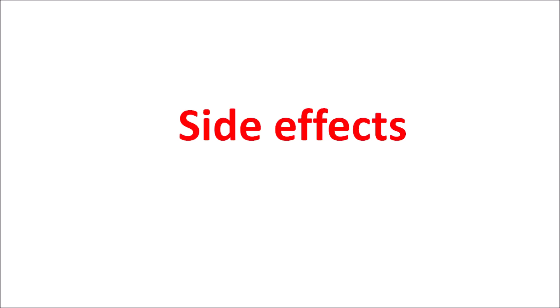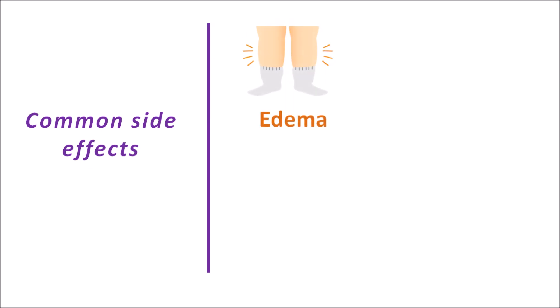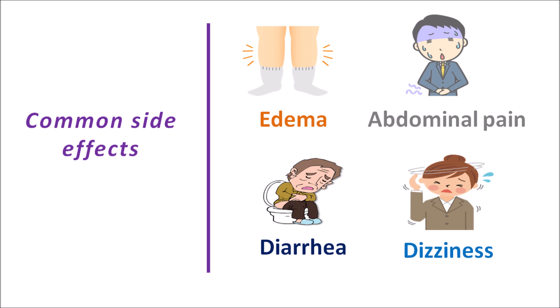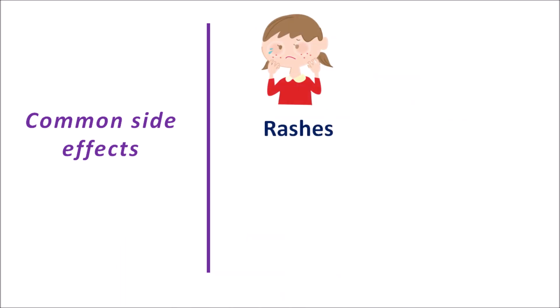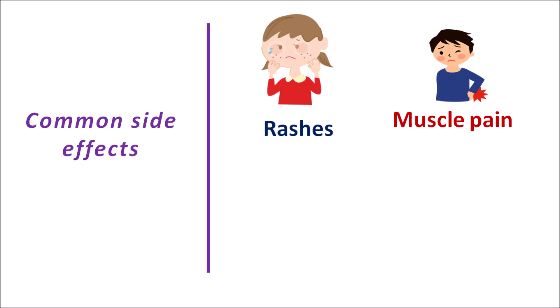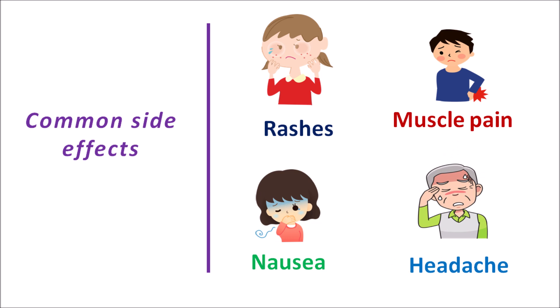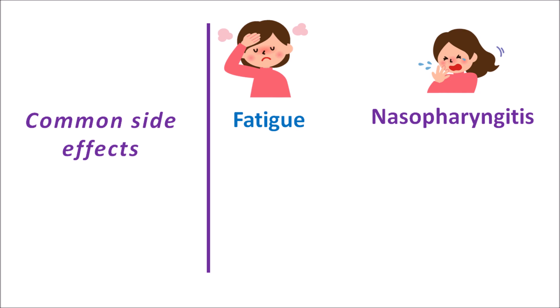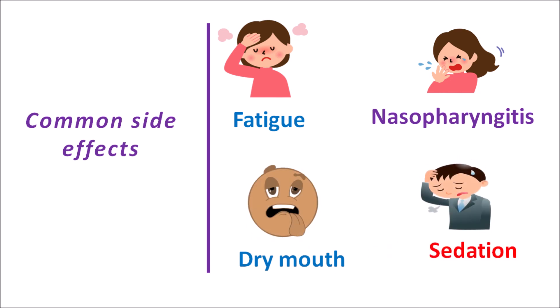Common side effects of imatinib include edema due to fluid retention, which may increase cardiovascular complications. Gastrointestinal side effects include abdominal pain and diarrhea. It can also produce dizziness and lightheadedness, impairing daytime activities. Other common side effects include skin rashes, muscle pain, joint pain, bone pain, nausea, and headache. It can also cause respiratory fatigue, lack of energy, nasopharyngitis, sinusitis, and cold-like symptoms. Dry mouth, sedation, and loss of concentration can also be observed.